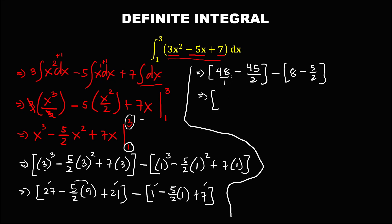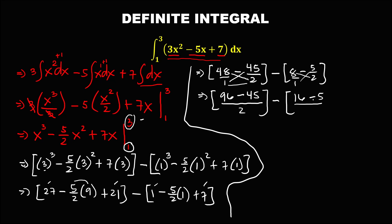Using the butterfly method: 48 over 1, so multiply — 48 times 2 is 96, then minus 45, all over 2. This gives 51 over 2. Then for the other bracket: 8 times 2 is 16, minus 5, which is 11, over 2.